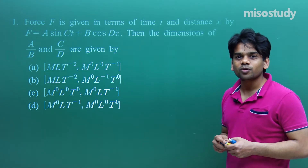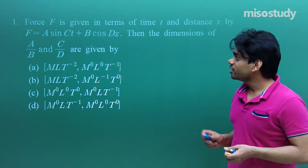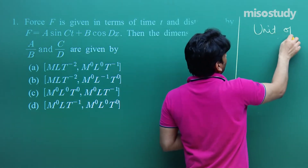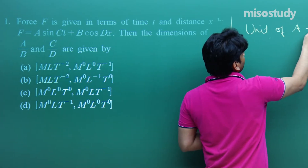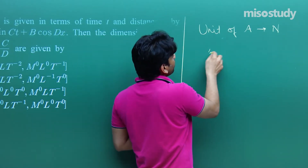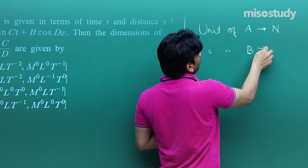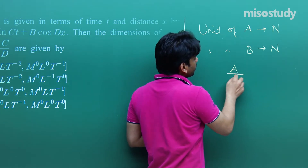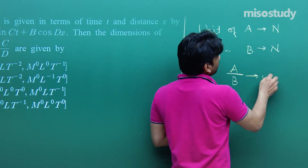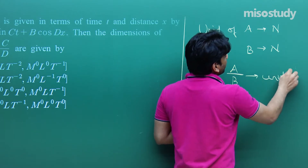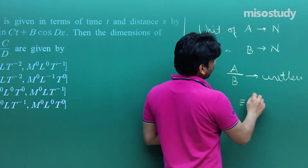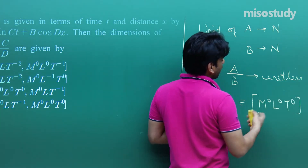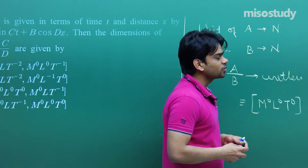The dimension of a/b will be M⁰L⁰T⁰. So let me write: unit of a is Newton, unit of b is Newton, so a/b will be unitless — its dimension turns out to be M⁰L⁰T⁰. We have found the dimension of a/b.